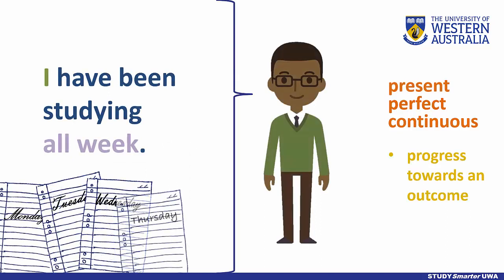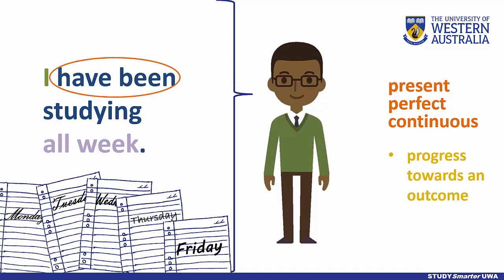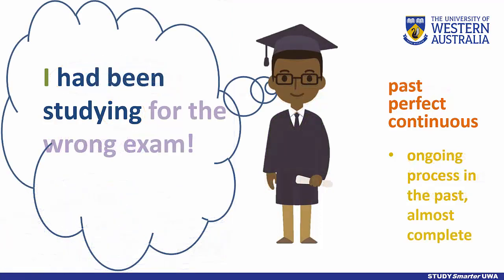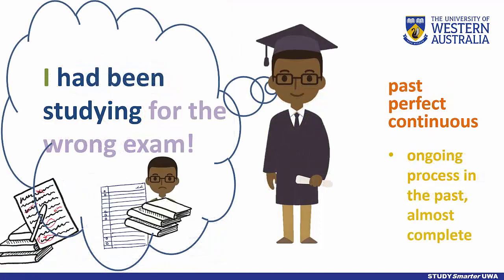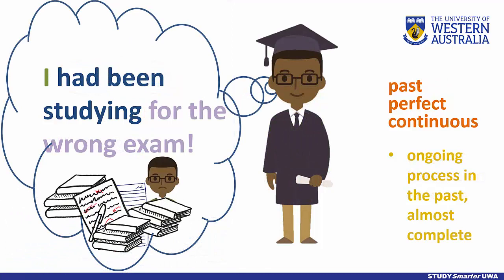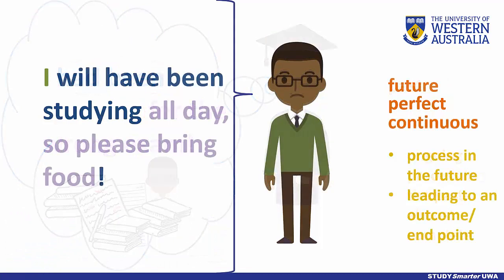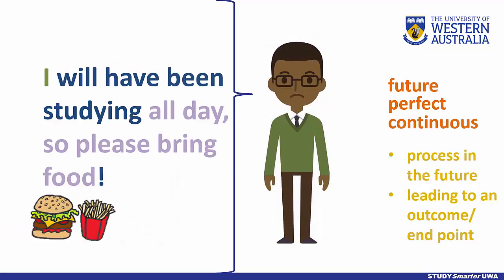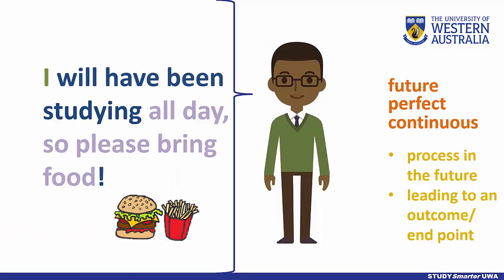The perfect continuous combines the previous two aspects. It is formed using the perfect form of the verb 'to be' in either the past, present, or future form, and adding the present participle, or -ing form, of the main verb. The perfect continuous indicates an ongoing action that is almost complete or leading towards an outcome.